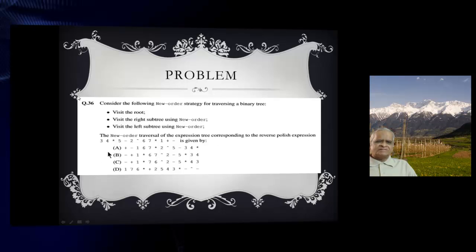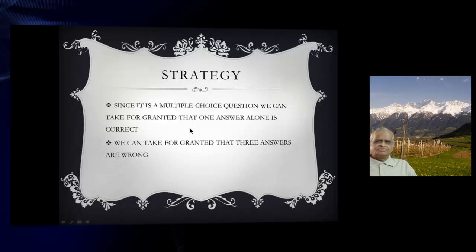There are four choices: A, B, C, D. It is a multiple choice question. The examiner guarantees one answer is correct and three answers are wrong. If we can identify the correct answer, the rest must be wrong. We can take for granted three answers are wrong and one answer alone is correct.